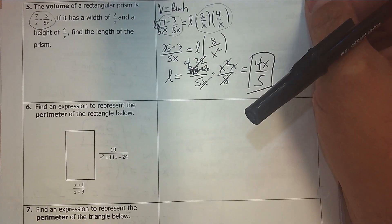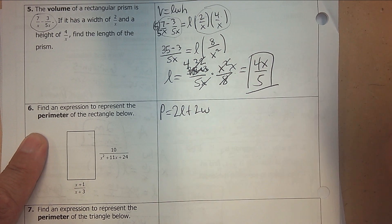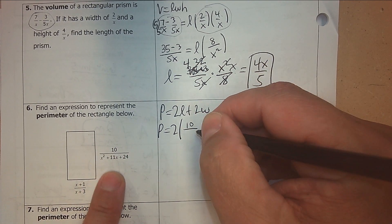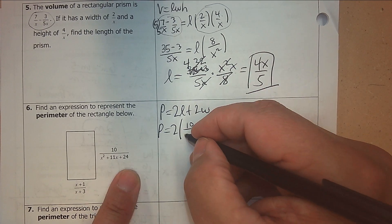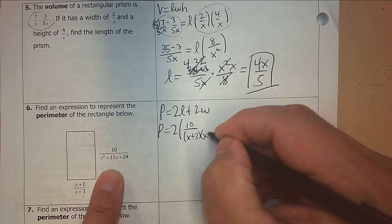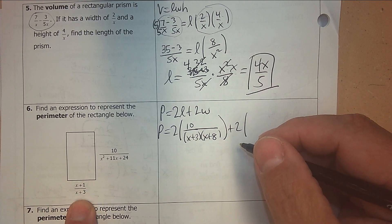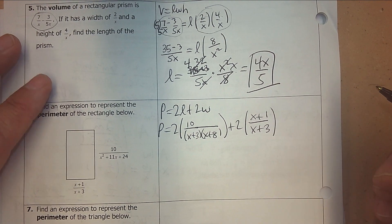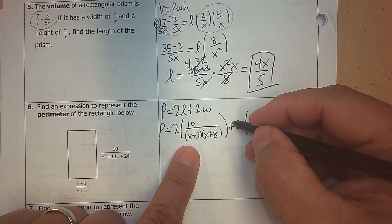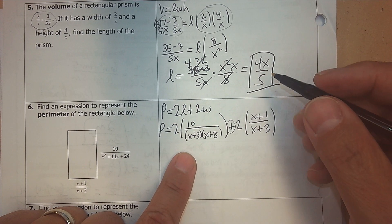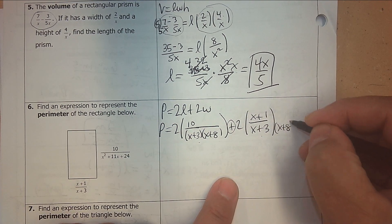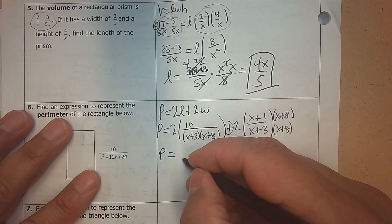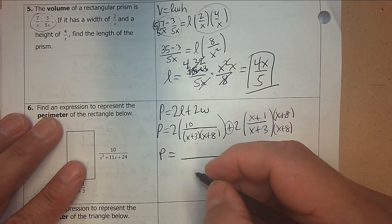Number 6: the perimeter of a rectangle. That's twice the length plus twice the width. The length is 10 over x squared plus 11x plus 24 — I'm going to factor that right away. Two numbers that multiply to 24 and add to 11 are positive 8 and positive 3. The width has x plus 1 and x plus 3. For me to combine these, the denominators have to be the same. The common denominator is x plus 3 and x plus 8.